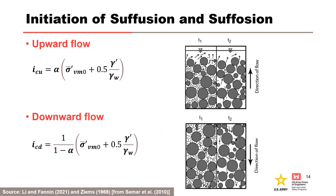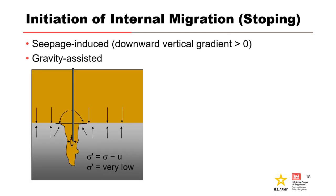Lee and Fannin in 2021 developed relationships for critical hydraulic gradient in one-dimensional vertical seepage, as shown on this slide. For internal migration, a downward gradient is needed to move eroded particles into the open defect. There also needs to be enough seepage gradient in the defect to transport eroded particles to the exit.